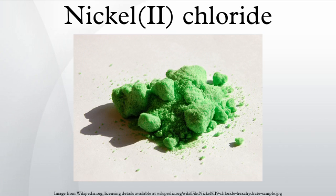The hydrates convert to the anhydrous form upon heating in thionyl chloride or by heating under a stream of HCl gas. Simply heating the hydrates does not afford the anhydrous dichloride. The dehydration is accompanied by a color change from green to yellow. In cases where one needs a pure compound without presence of cobalt, nickel chloride can be obtained by cautiously heating hexamine nickel chloride.